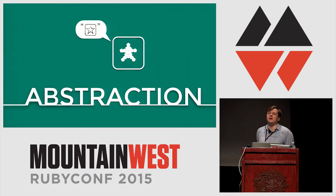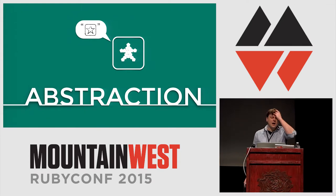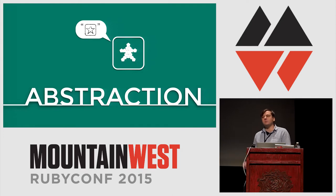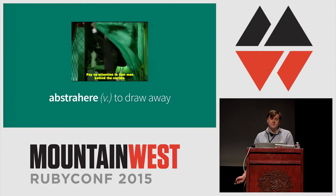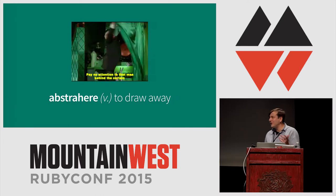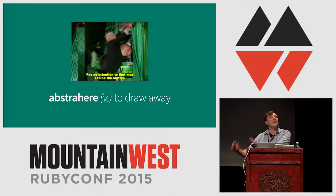I'd like to start today by talking about abstraction. For my money, abstraction is the single most important concept in computer science — it's a principle that underlies so much of modern technology. In the talk summary I called it strategic lying, which is a little bit unfair. Let's define it as: abstraction is the use of simplifying metaphors to manage complexity. The word comes from the Latin abstractus, the past participle of abstrahere, which means to draw away — sort of like, don't look over there, look over here, or don't worry about that, just worry about this.